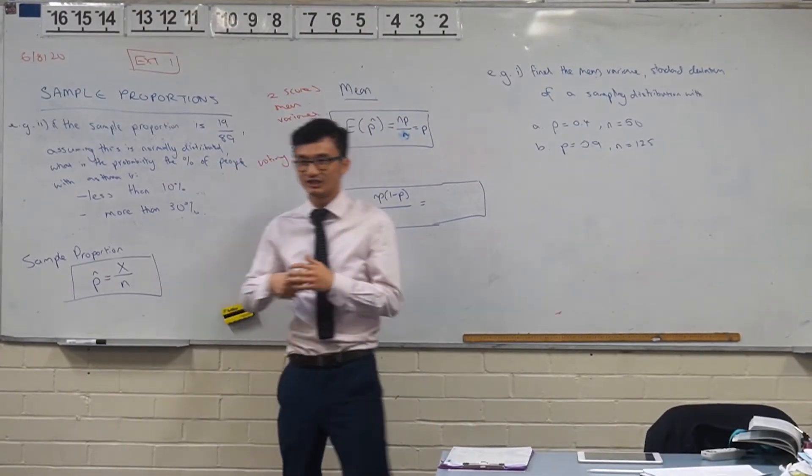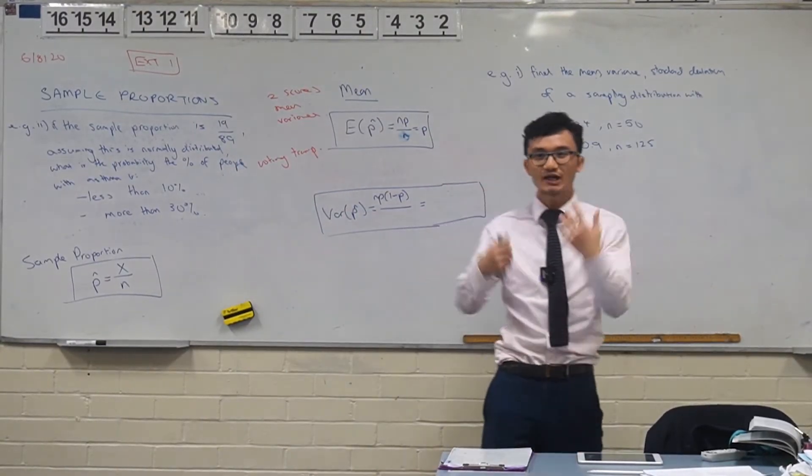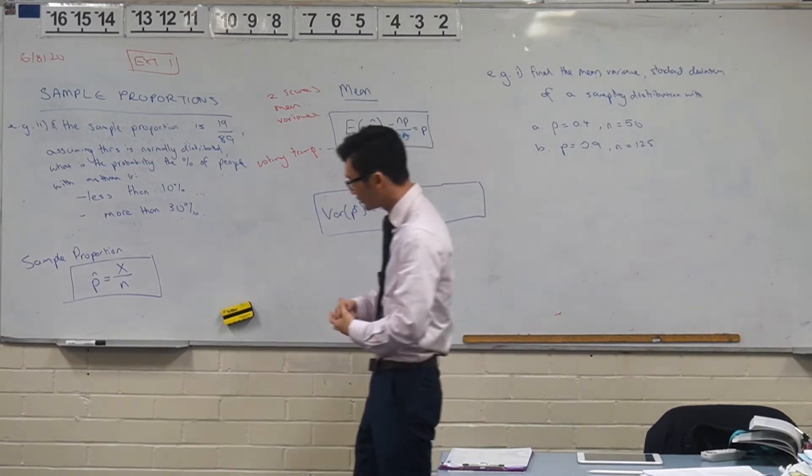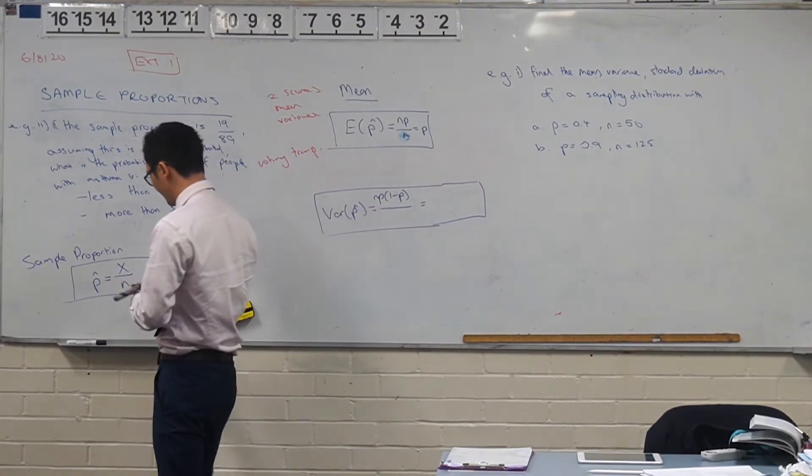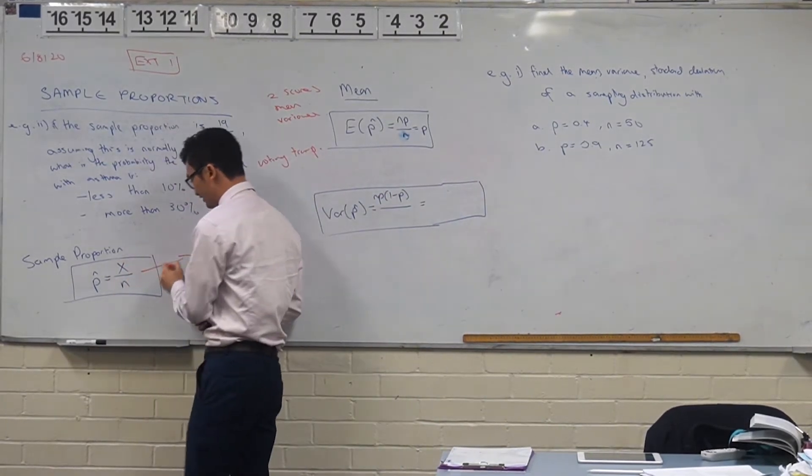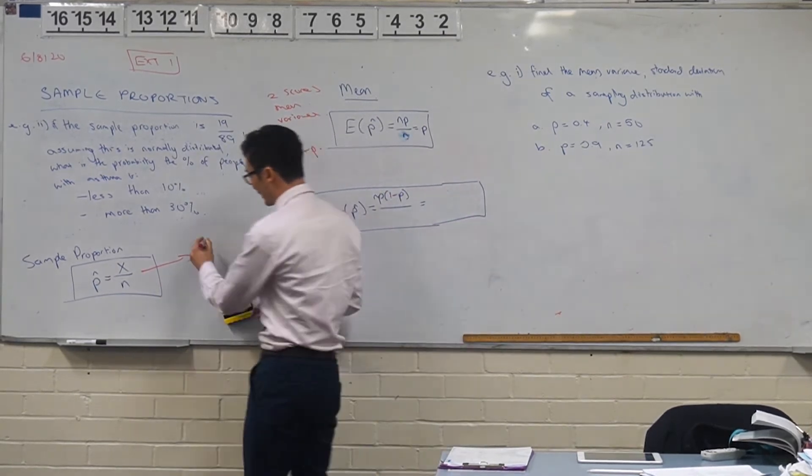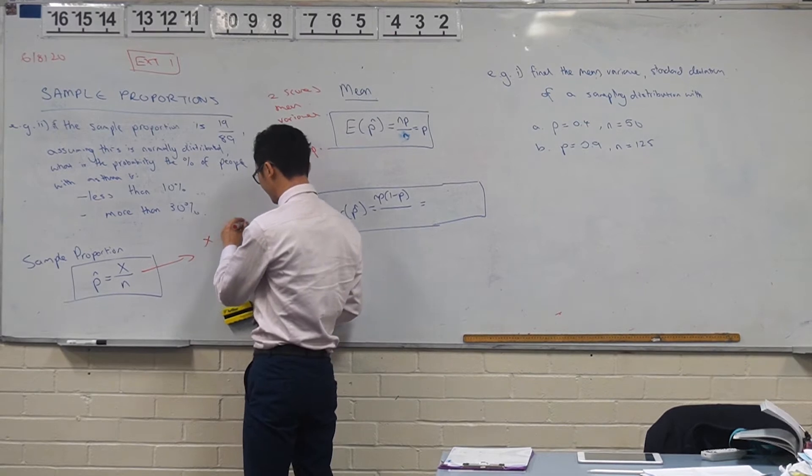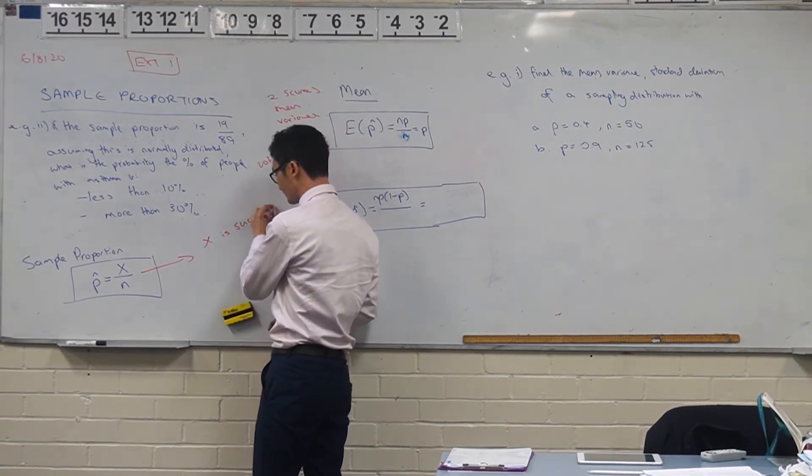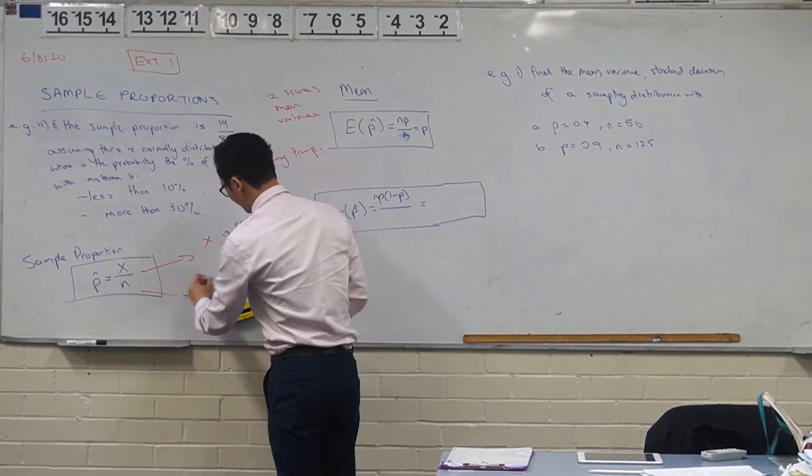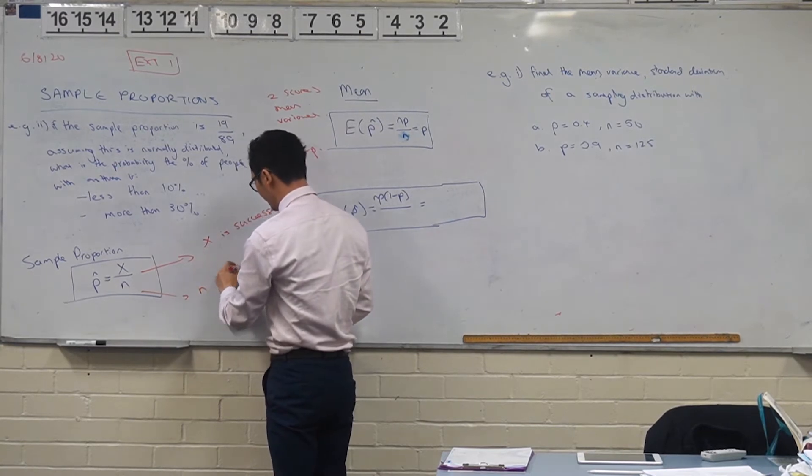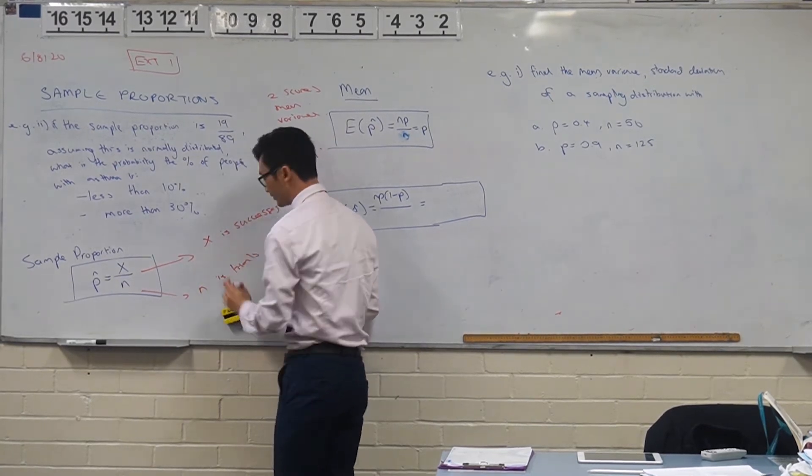We have a population proportion P, which is the actual population that occurs. The sample proportion is essentially taking a percentage. It's saying, how many successes do I have? So x is the successes. And n is the number of trials or experiments or surveys that you're running.